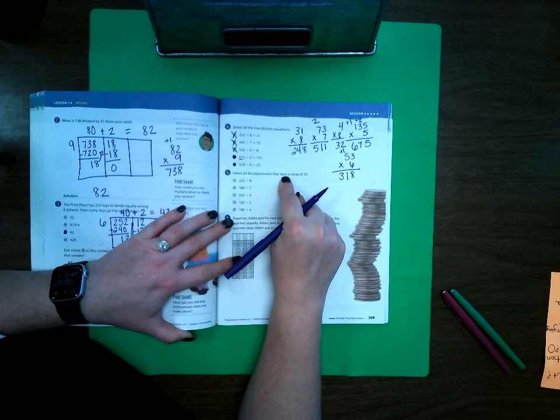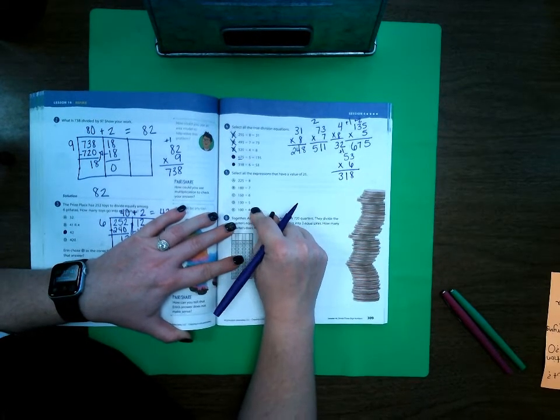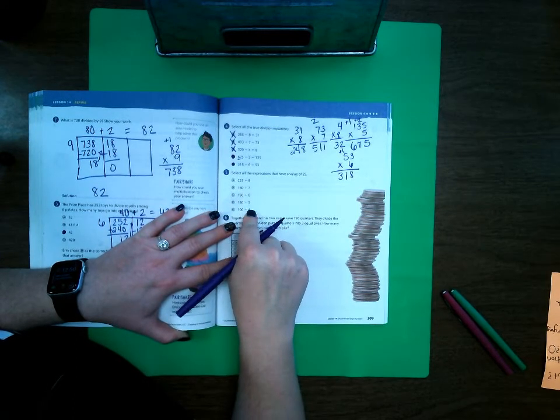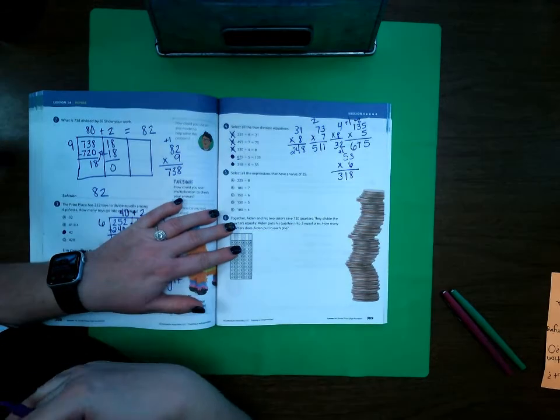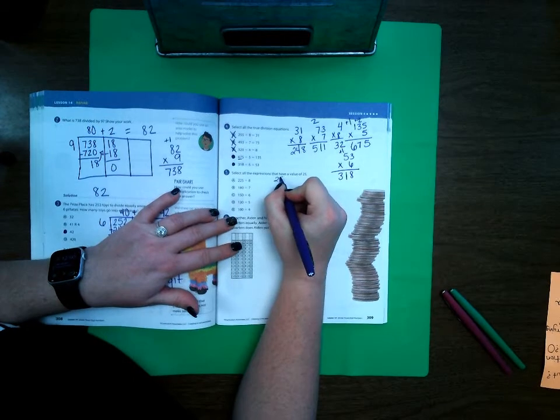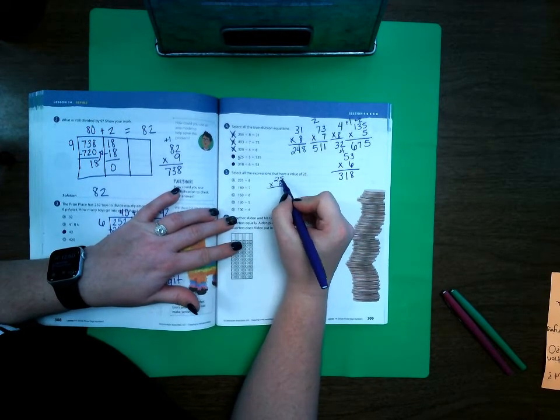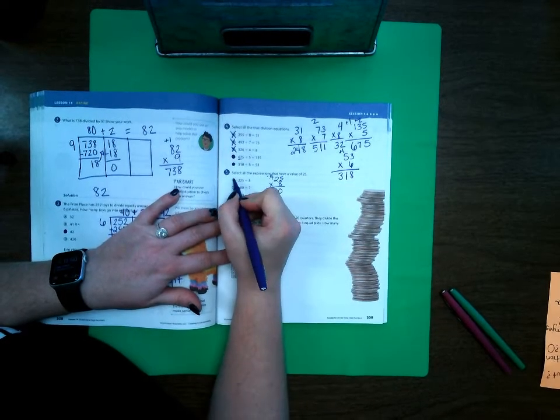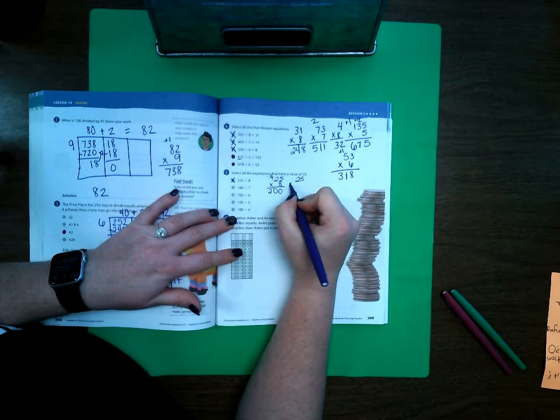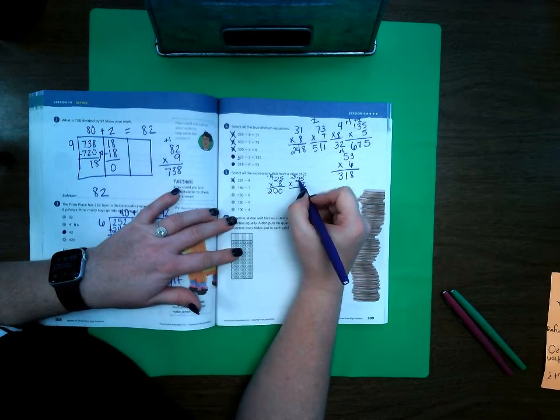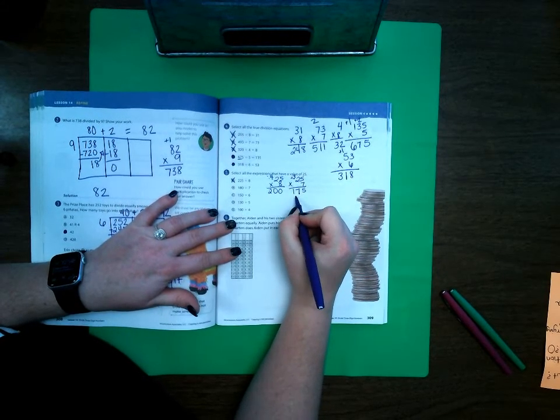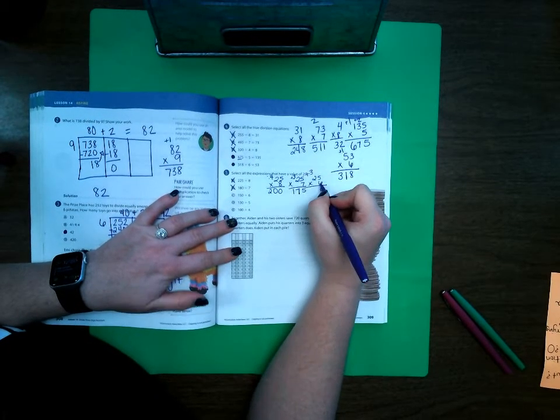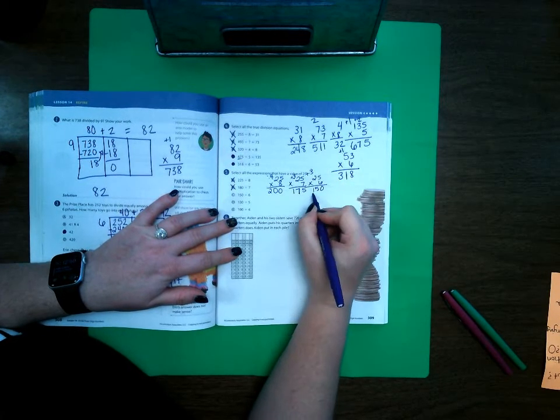Select all of the expressions that have a value of 25. There's two different ways that you can do this. One, you can either do this one by multiplying each of the last numbers by 25 or you can go ahead and do the division problem. I think it's easier and quicker to do the multiplication so I'm going to multiply each of these times 25. 8 times 5 is 40, 8 times 2 is 16, 17, 18, 19, 20. So the answer should be 200 but it's 225 so that's not right. 25 times 7, 7 times 5 is 35, 7 times 2 is 14, 15, 16, 17, 175. This says 180 that's not right. 25 times 6, 5 times 5 is 30, 6 times 5 is 12, 13, 14, 15, 150. That's what it says so C is correct.